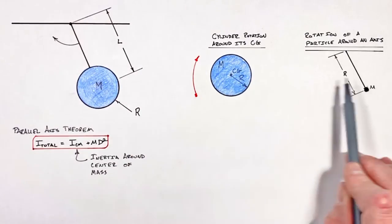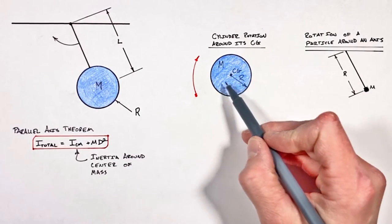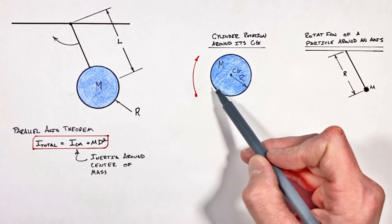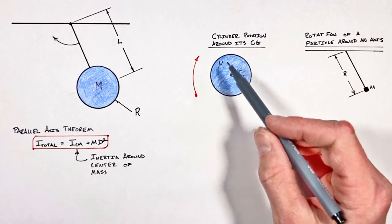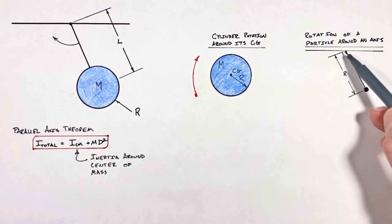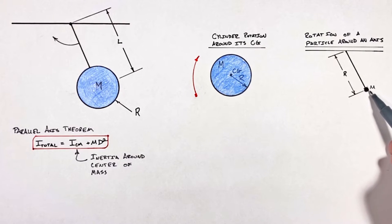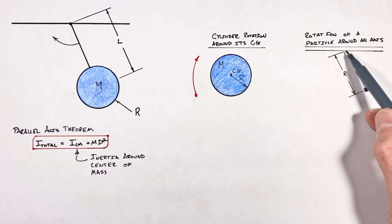The first rotation being the rotation of this cylinder around an axis which passes through its center, and the second being viewing the cylinder as a point mass which is rotating around